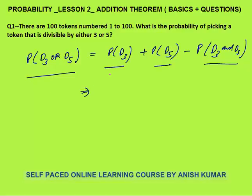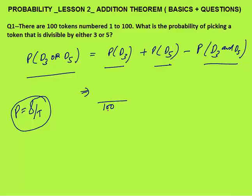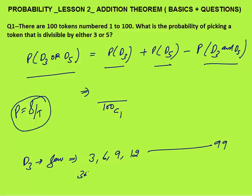What is the probability that the token number is divisible by 3? Probability is favourable upon total cases. Total cases: we draw 1 token out of 100, so total cases = 100C1. Favourable cases: token numbers divisible by 3 are 3, 6, 9, 12, up to 99, which is 3×1 to 3×33 — so 33 favourable token numbers. Favourable cases = 33C1.